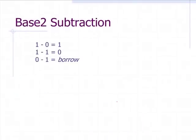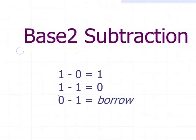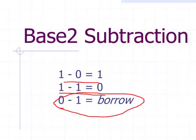Now let's move to subtraction. Here are the rules: 1 minus 0 is 1, 1 minus 1 is 0, and if you do 0 minus 1, you've got to do the borrow thing.